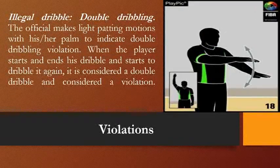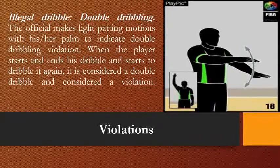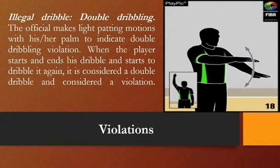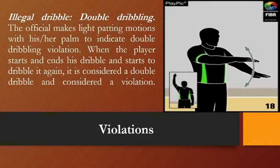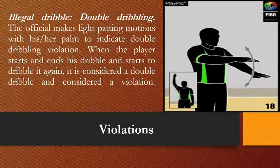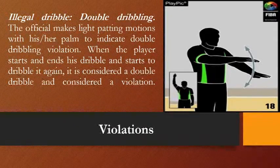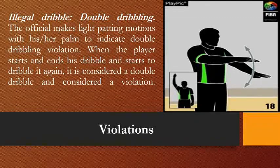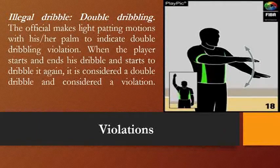Another violation is illegal dribble and double dribbling. The official makes a light patting motion with the hand pumping up and down to indicate double dribbling. When the player starts and ends a dribble and then starts to dribble again, it is considered double dribble. Also, dribbling with both hands simultaneously is a double dribble. Players must dribble with the finger pads using wrist action, not the palm.